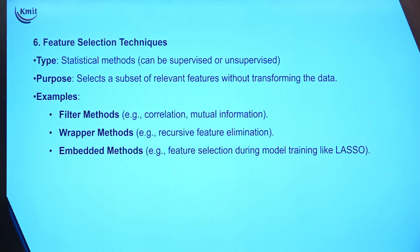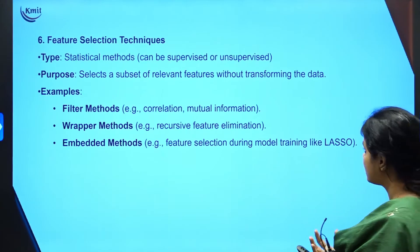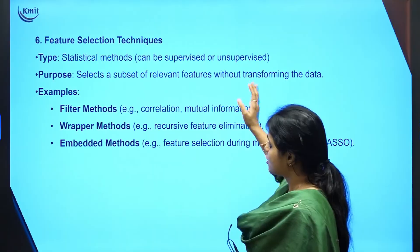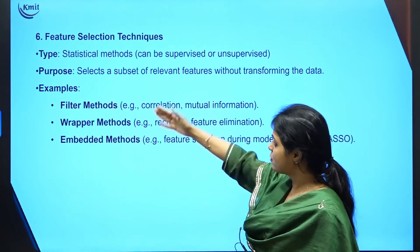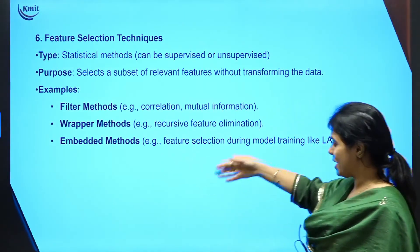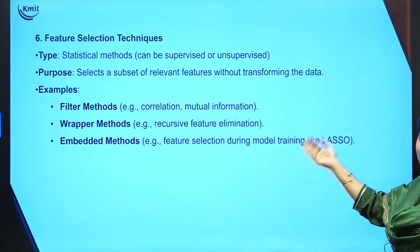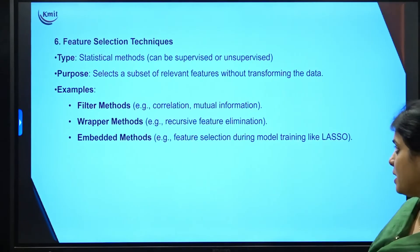Finally, we have feature selection techniques — statistical methods that can be applied to both supervised and unsupervised machine learning. These select subsets of relevant features identified in the data without transforming the data. Examples include: correlation and mutual information in filter methods, recursive feature elimination in wrapper methods, and embedded methods such as Lasso regression.